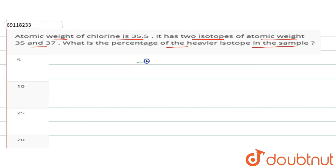Here, we have two isotopes, Cl-35 and Cl-37, both of chlorine. The atomic weight of chlorine is 35.5. We can say that the average weight is 35.5. This percentage of abundance is x percent, and this percentage of abundance is 100 minus x percent.